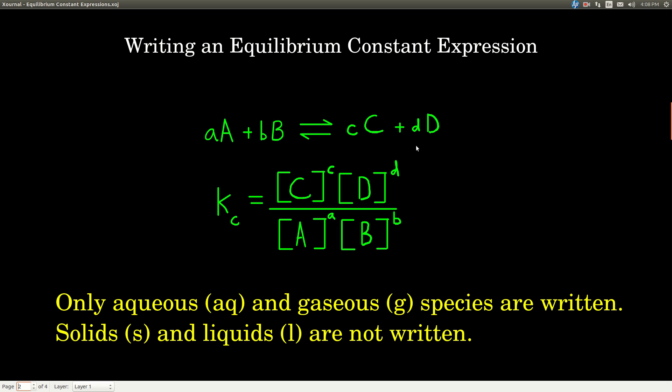Now there might be, you know, like A, B, and C on the left and just D on the right, or just one thing on the left, one thing on the right, but this is the general form.